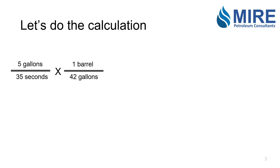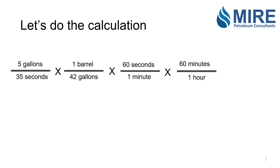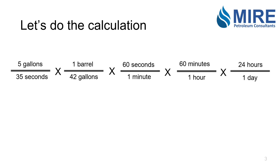We know that one barrel is equal to 42 gallons, 60 seconds is equal to 1 minute, 60 minutes is equal to 1 hour, and 24 hours is equal to 1 day. So we multiply all these together.